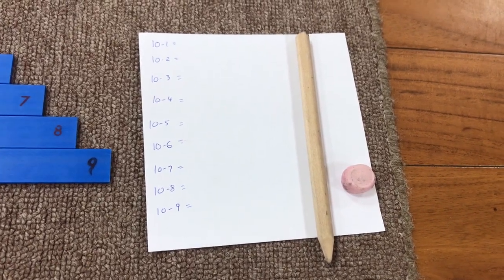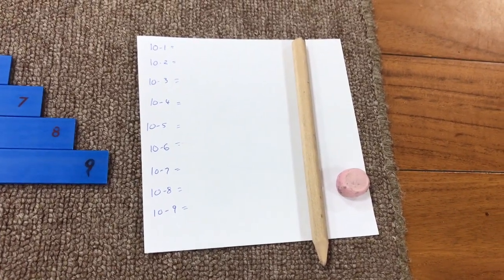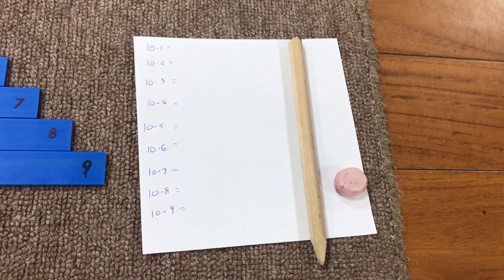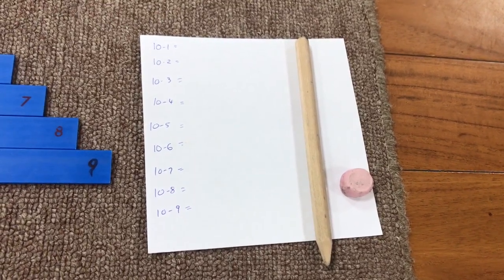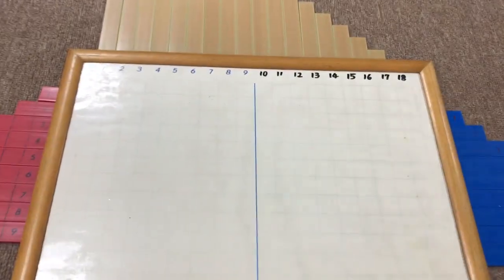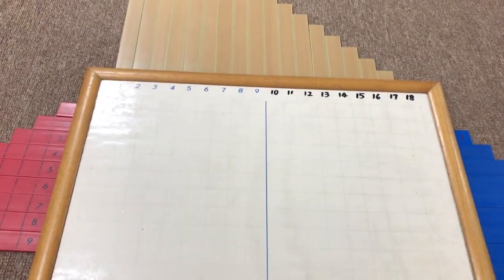So 10 minus 1, 10 minus 2, 10 minus 3. Later on you can even mix this up with children, but the first time it's easier to put it in a demonstration. There are ways to introduce this. I'm going to show you the main way to do this once the child's really ready for it.